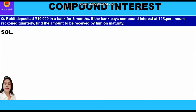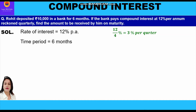Now let's start with the solution. The rate of interest is 12% per annum and interest is compounded quarterly. In a year there are four quarters of three months each, so we divide 12 by 4 to get 3% per quarter. The time period is six months, that is three plus three, giving us two quarters.